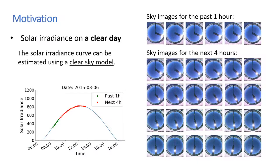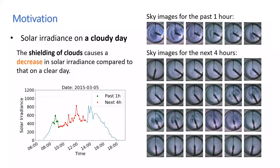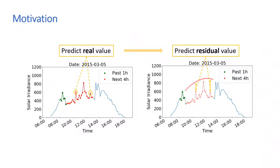Our motivation was inspired by the effect of clouds on solar irradiance. On a clear day, the solar irradiance curve is approximate to a normal distribution and can be estimated by a clear sky model. But on a cloudy day, the shading of clouds in the sky causes a decrease in solar irradiance compared to that on a clear day.